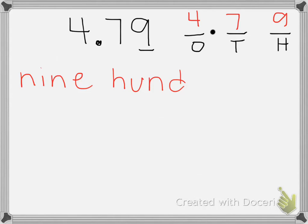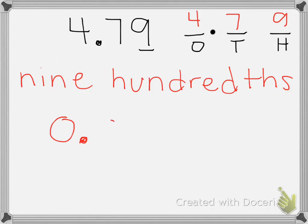We can write the value using words in word form like that, or we can write it using numbers. This 9 is in the hundredths place, so when I write its value it needs to still be in the hundredths place. So I need a zero in my ones, my decimal point, a zero in my tenths, and the 9 in the hundredths. That would be the number 9 hundredths, and that's the value of the 9 in that number.